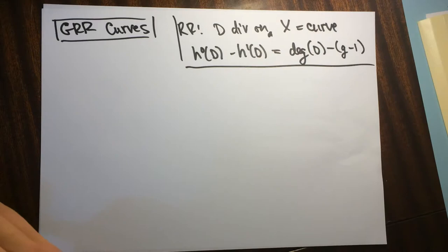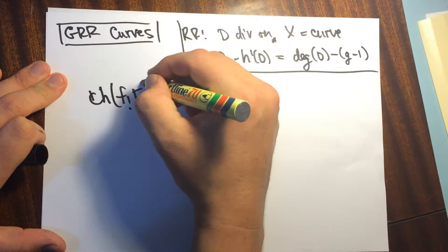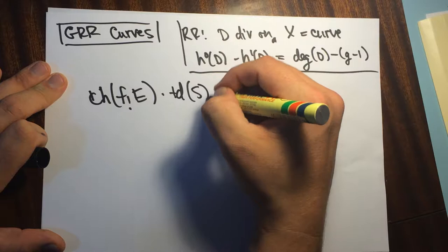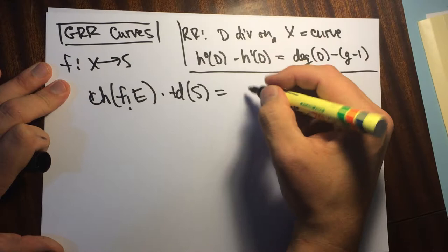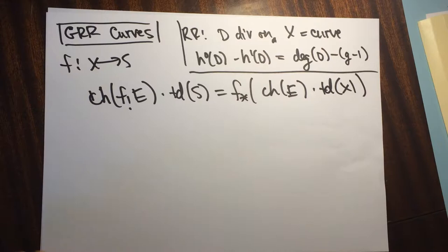So this is the formula that we're going to look for. The Grothendieck-Riemann-Roch formula says that when you pair the Chern character of this higher push forward with the Todd class of S — so we have a proper map X to S — this is equal to the push forward of the Chern character of E paired with the Todd class of X.